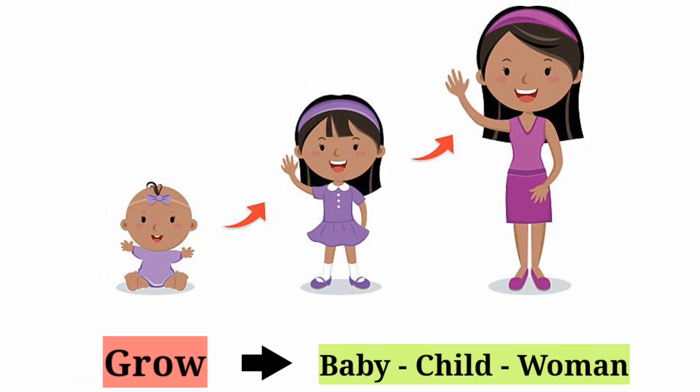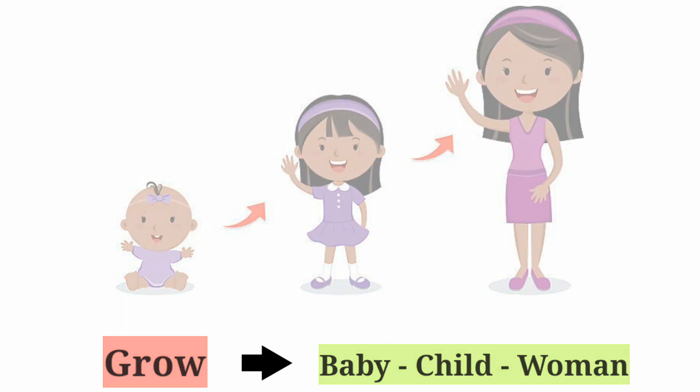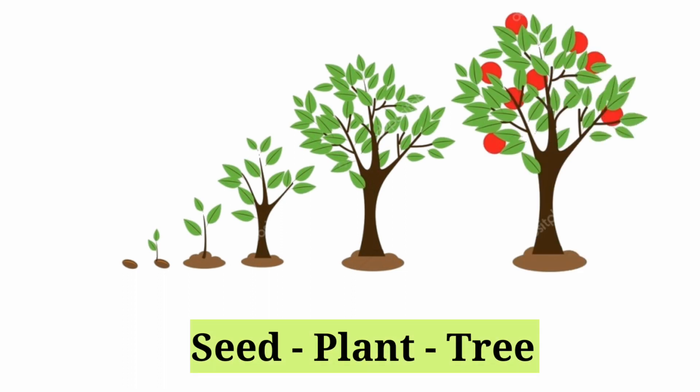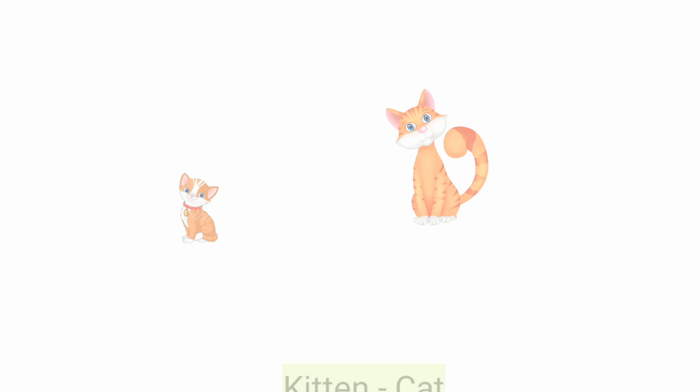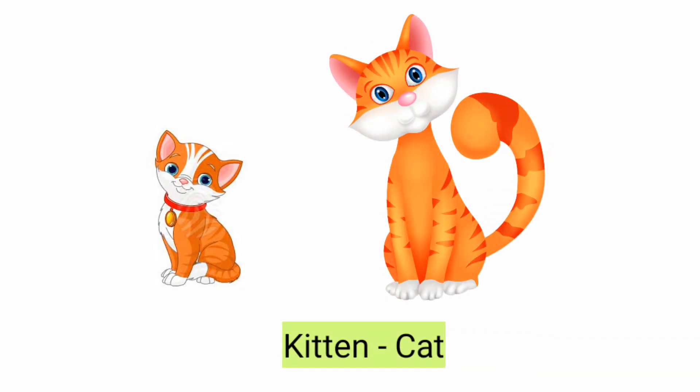Grow: A baby girl grows into a child and later grows into a woman. A seed grows into a plant and later becomes a tree. And a kitten grows into a cat.